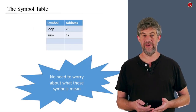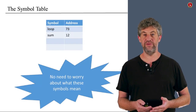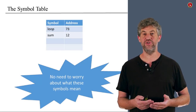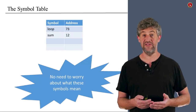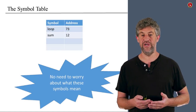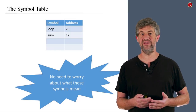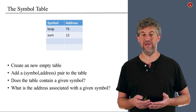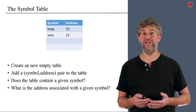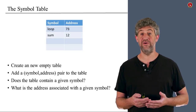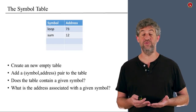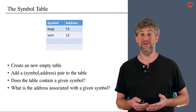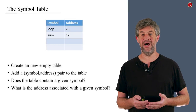Let us now move into the third part: the symbol table — the actual table that keeps the association between symbol names and their addresses. The important thing is what the symbol table doesn't have to understand. It doesn't need to understand anything about machine language, assembly language, or what the symbols mean. The only thing our symbol table has to do is maintain an association between a symbol and a memory address. In particular, it must be able to: create a new empty symbol table, add a symbol-address pair to the table, and look up whether a symbol exists and what its address is.